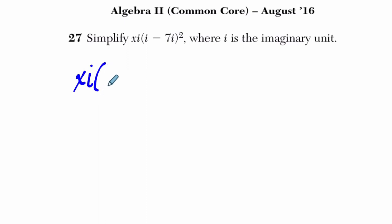I've got a square, i minus 7i, so I'm going to expand that binomial, and then what I'm going to do is distribute. So I'm going to leave this xi out for now.